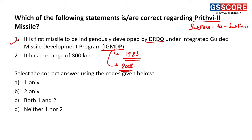The second statement says Prithvi 2 has a range of 800 kilometers — this is incorrect. The actual range of Prithvi 2 is only 350 kilometers, not 800 kilometers. So the first statement is correct and the second is incorrect. The answer is A — 1 only.